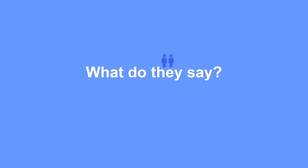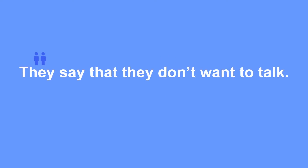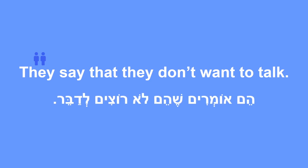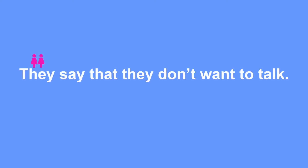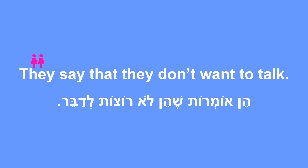What do they say? — Ma hem omerim? They say that they don't want to talk — Hem omerim she hem lo roce ledaber. What do they say? — Ma hen omerot? They say that they don't want to talk — Hen omerot she hen lo roce ledaber.